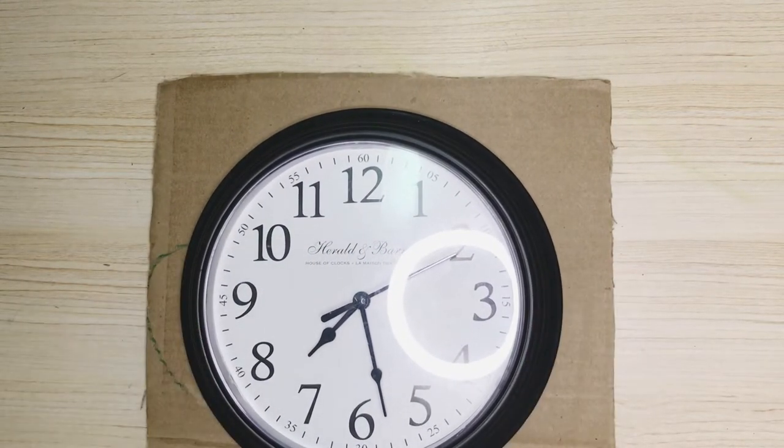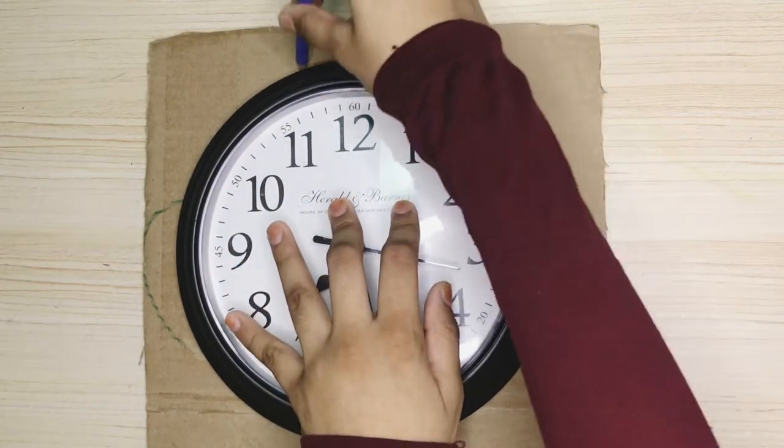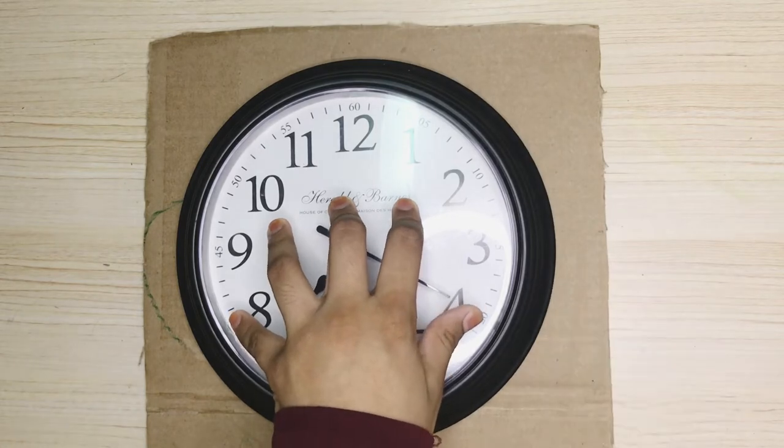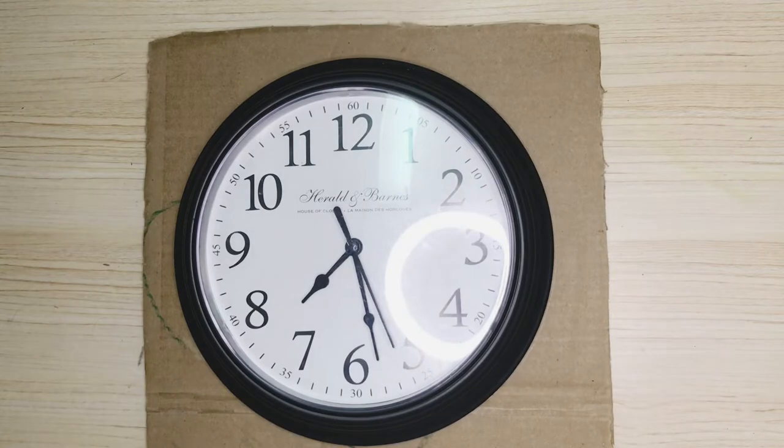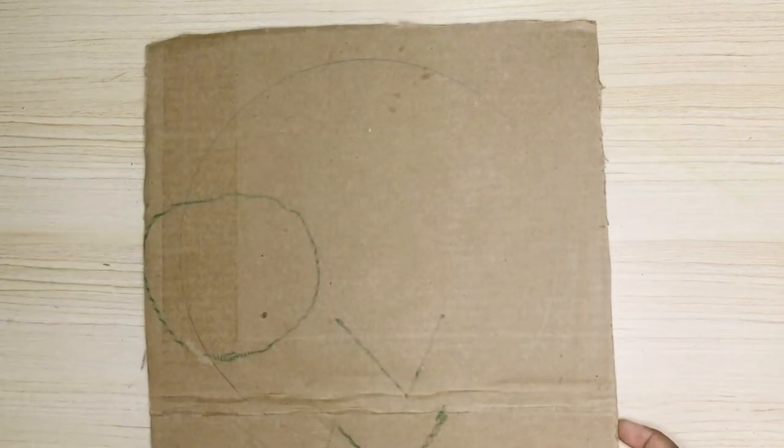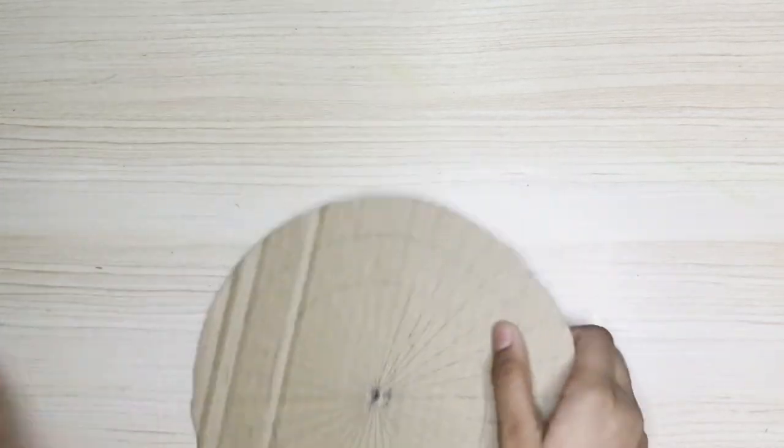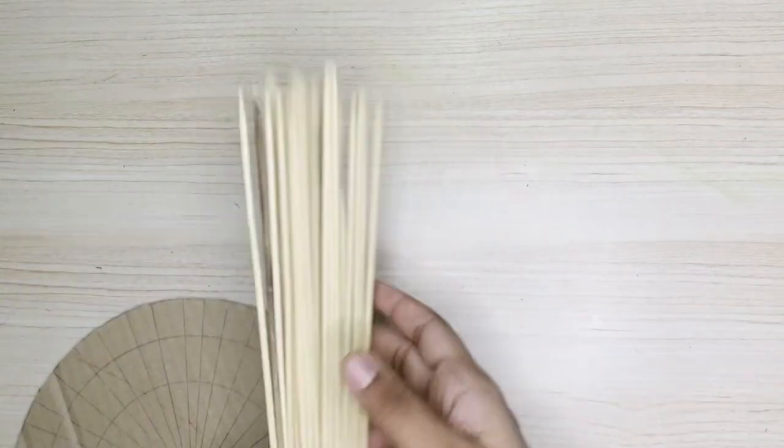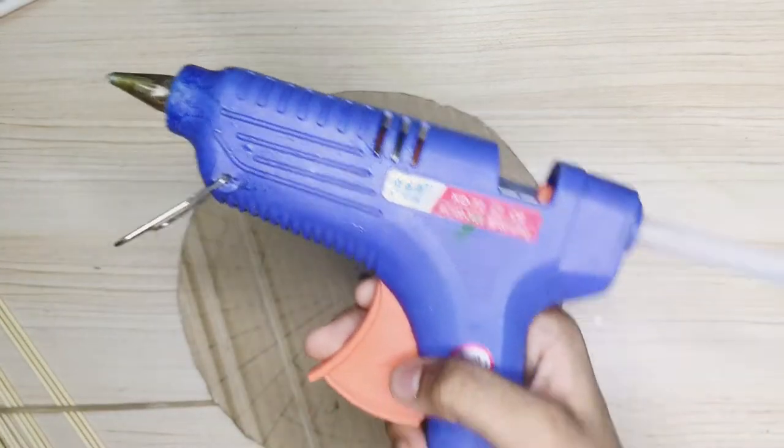Then I am cutting this out. I have now cut this out. I have also drawn some lines to stick the skewers. Now I am going to start sticking.